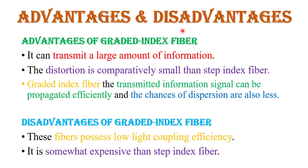Now, the advantages and disadvantages of graded index fiber. Advantages: it can transmit a large amount of information; distortion is less compared to step index fiber; and it transmits information efficiently with less dispersion compared to step index fiber. Disadvantages: graded index fiber has less light coupling efficiency, and it is more expensive compared to step index fiber.